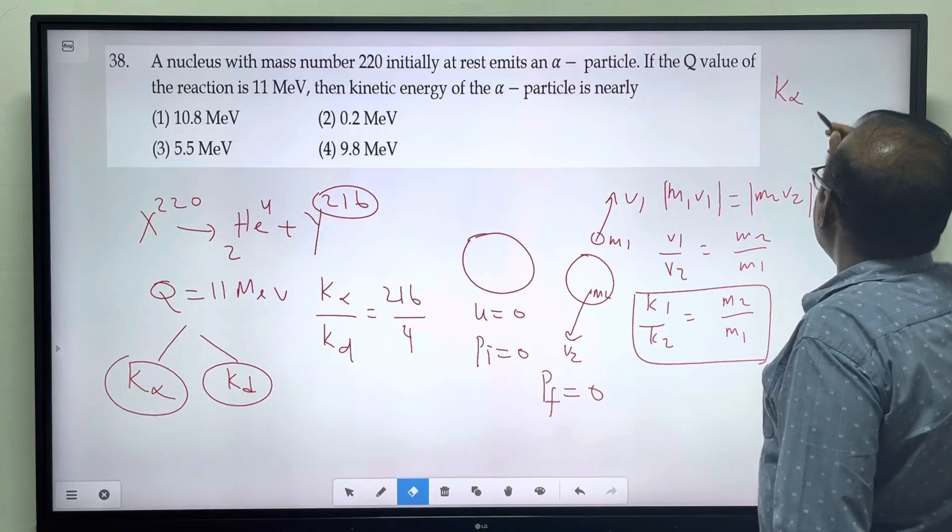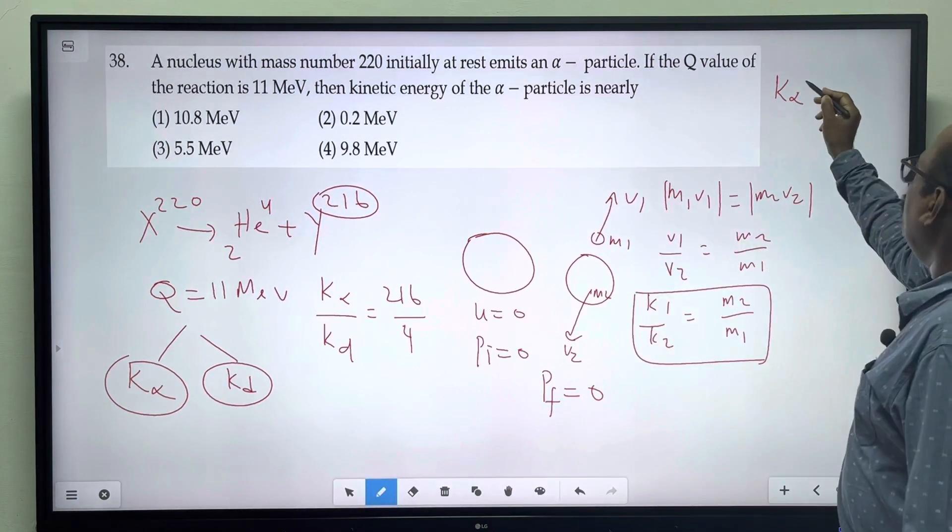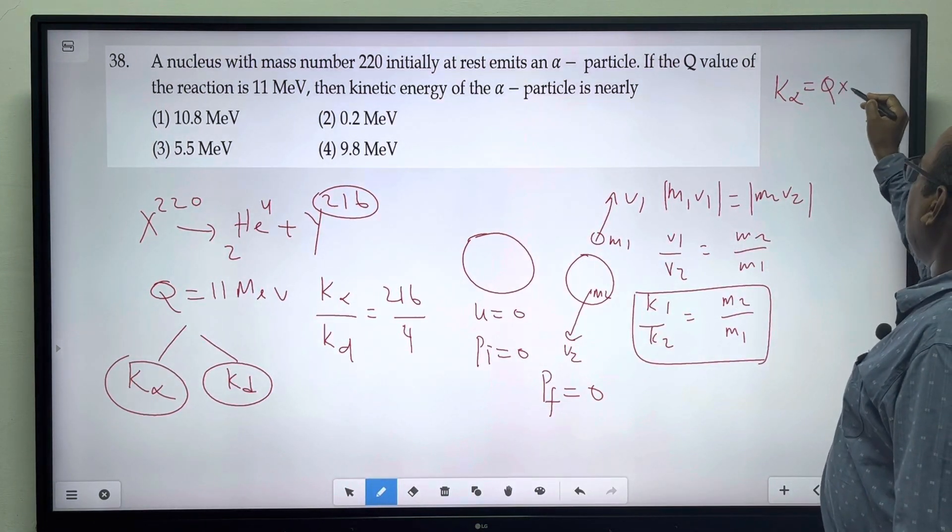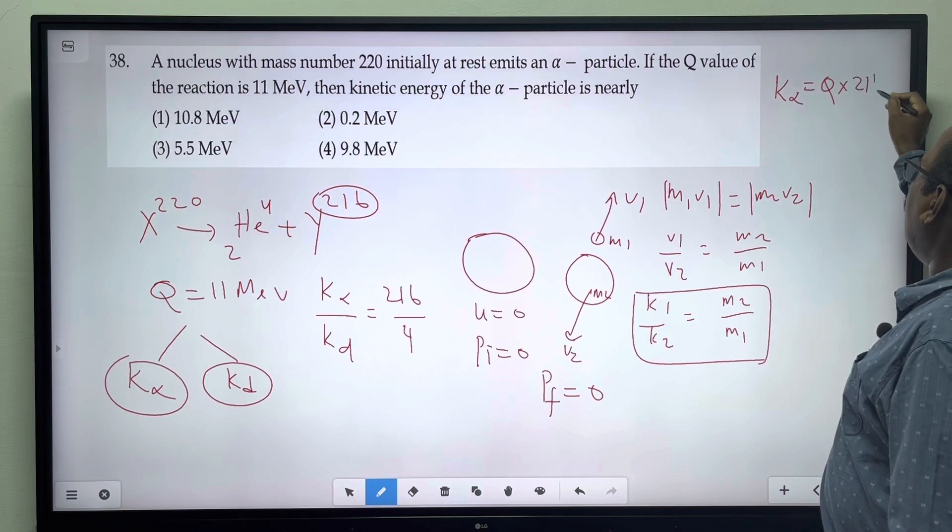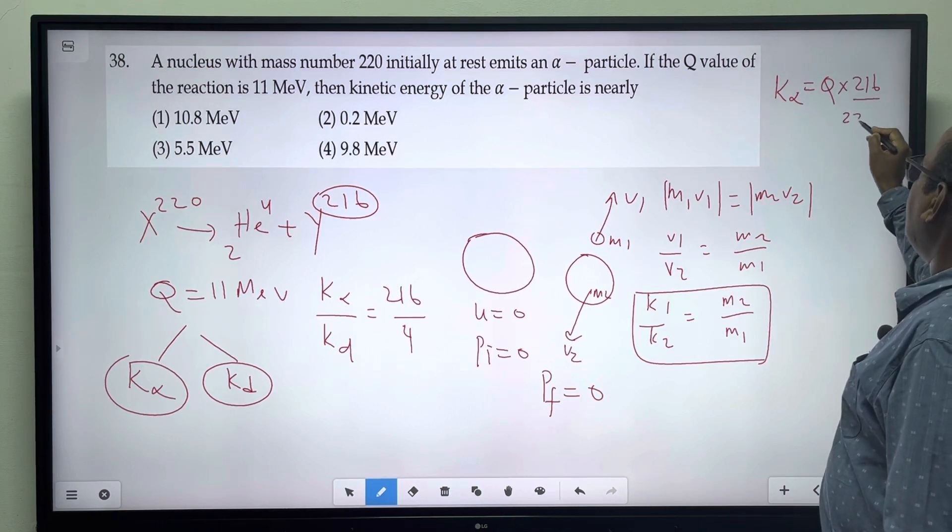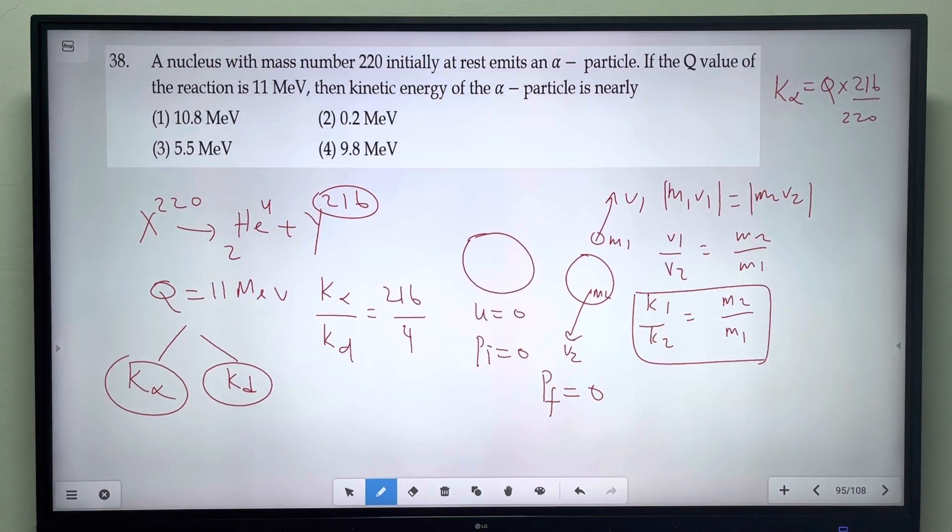The total energy and the daughter nucleus mass number n, total mass number n. Suppose in the case of daughter nucleus energy, alpha particle mass 4 divided by the total mass.